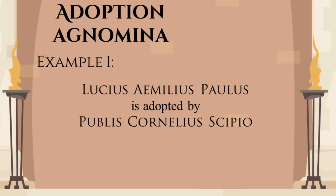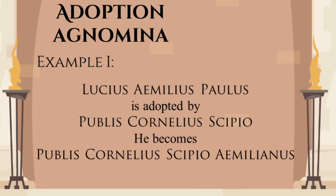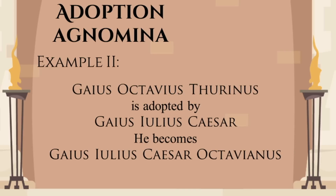Another common reason for gaining an agnomen was adoption. When a noble Roman was adopted, he would take his adoptive father's full name, and would also add a suffix to his former nomen and make it a cognomen. This is how the most famous Roman adoptee Gaius Octavius became Gaius Iulius Caesar Octavianus. Cognomina are the reason why later Roman names are so ridiculously long — sons would get some of their father's cognomina and add their own, on and on, until we get to one man who had 38 names.